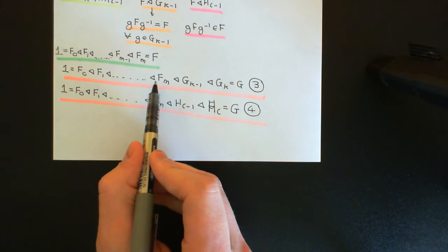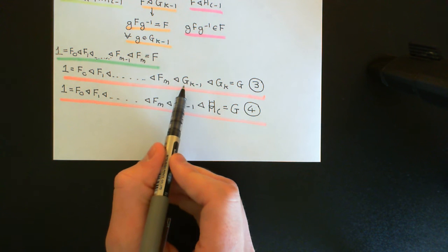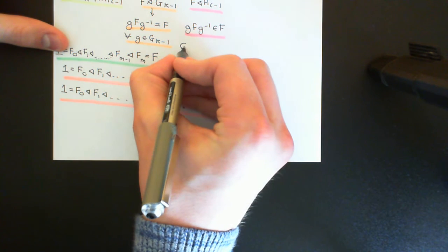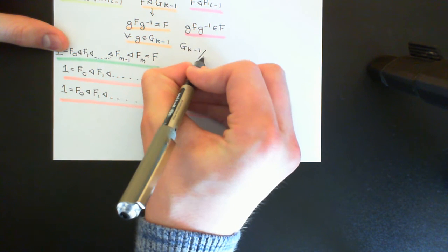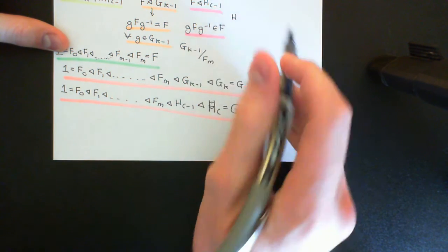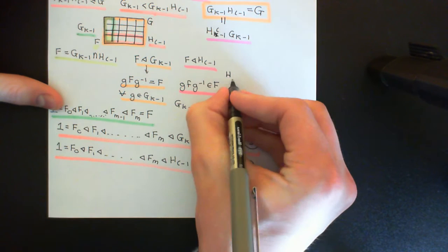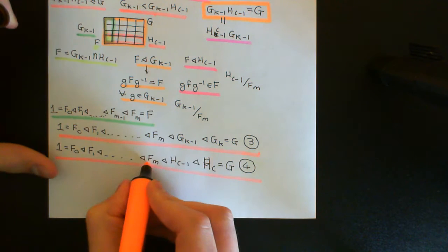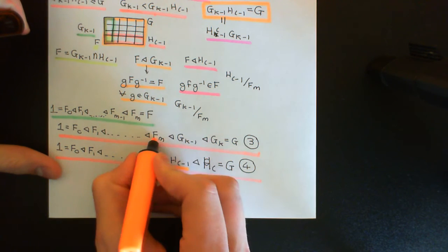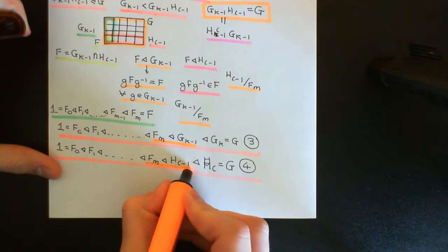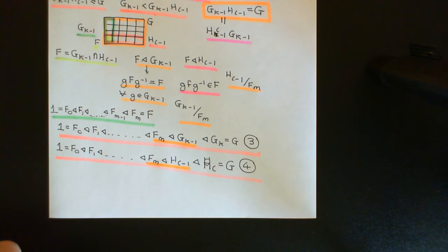The only jumps in composition series three and four we need to worry about are from F_m to G_{k-1} and from F_m to H_{l-1}. All other jumps come from existing composition series and are fine. We have already proven that F_m is a proper normal subgroup of both G_{k-1} and H_{l-1}. What we now need to verify is that G_{k-1} / F_m and H_{l-1} / F_m are both simple groups — these are the composition factors we need to prove.